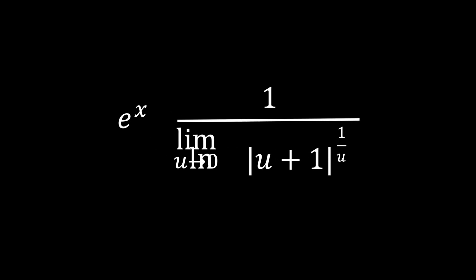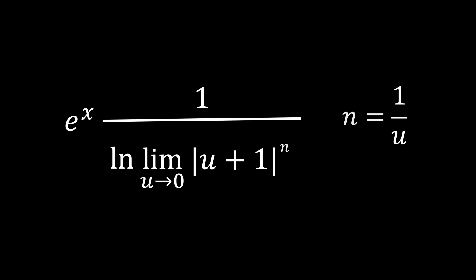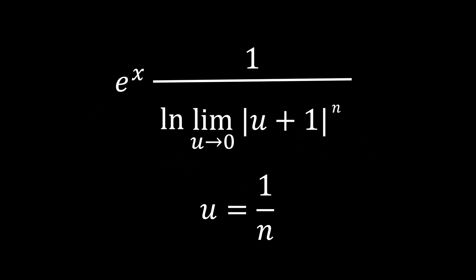The limit of the expression inside the natural logarithm has a familiar result, however, it is not currently in a recognizable form. If we set n equal to the current power and change the variable of the limit to n, we can see that we obtain the following recognizable limit.